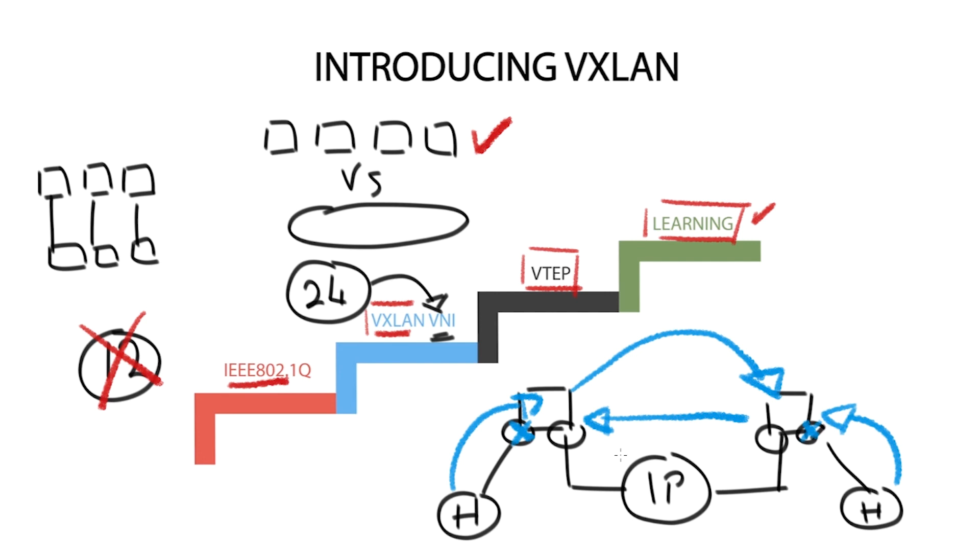The underlay control plane exchanges reachability information for the VTAP IP addresses and can be any IGPs such as OSPF or ISIS or even BGP can be used.